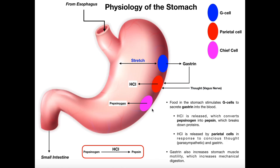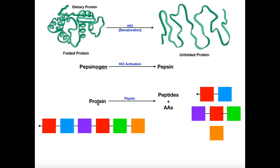There were specific cells called chief cells — these pink ones right here — that release pepsinogen into the stomach. The stomach acid is what activates pepsinogen into the active pepsin, and then pepsin is able to degrade proteins into smaller peptides and amino acids. That digestion is completed in the small intestine by both pancreatic enzymes, proteases, and brush border proteases.